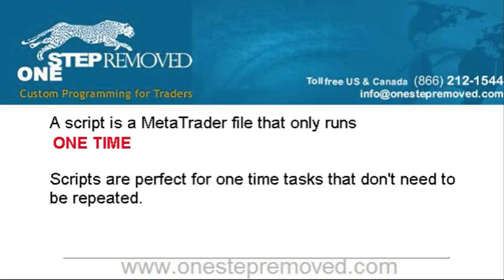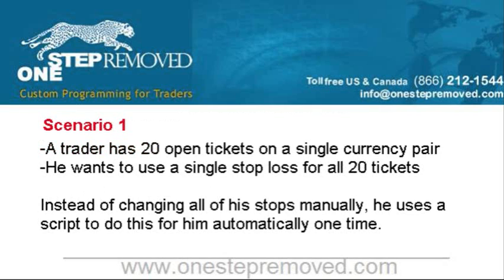It's the opposite of an expert advisor which runs continuously — where a tick comes in, it runs, a new tick comes in, it runs. It does that over and over again until you tell it to stop. The script, you put it on the chart once, it does what it's supposed to do, and it's done. To make it clear what scripts are intended for, we'll go through a couple examples.